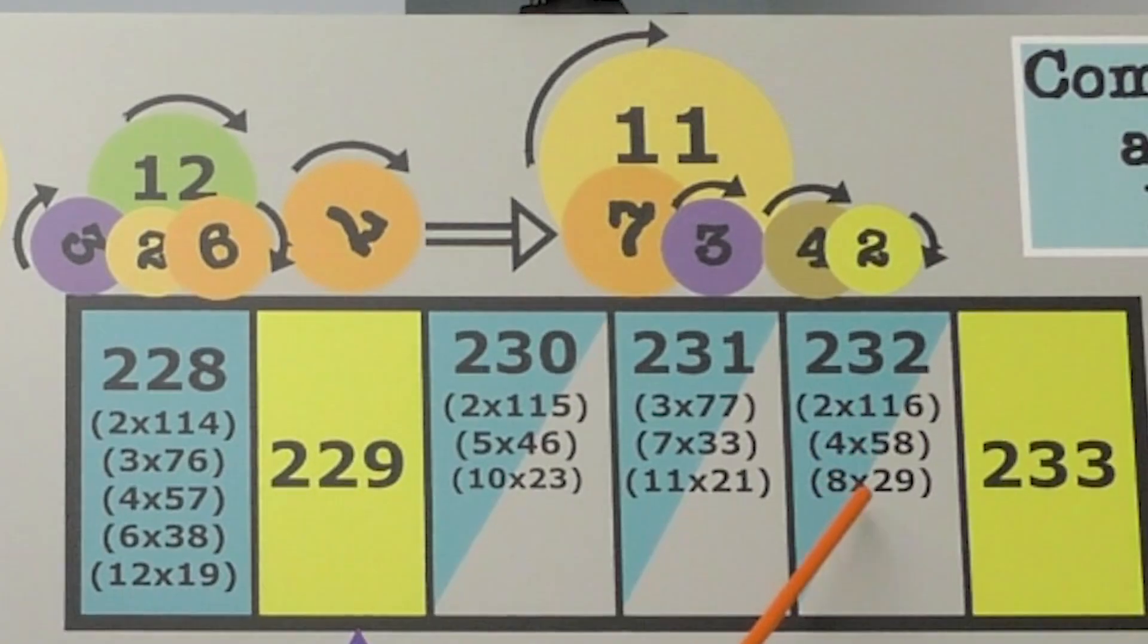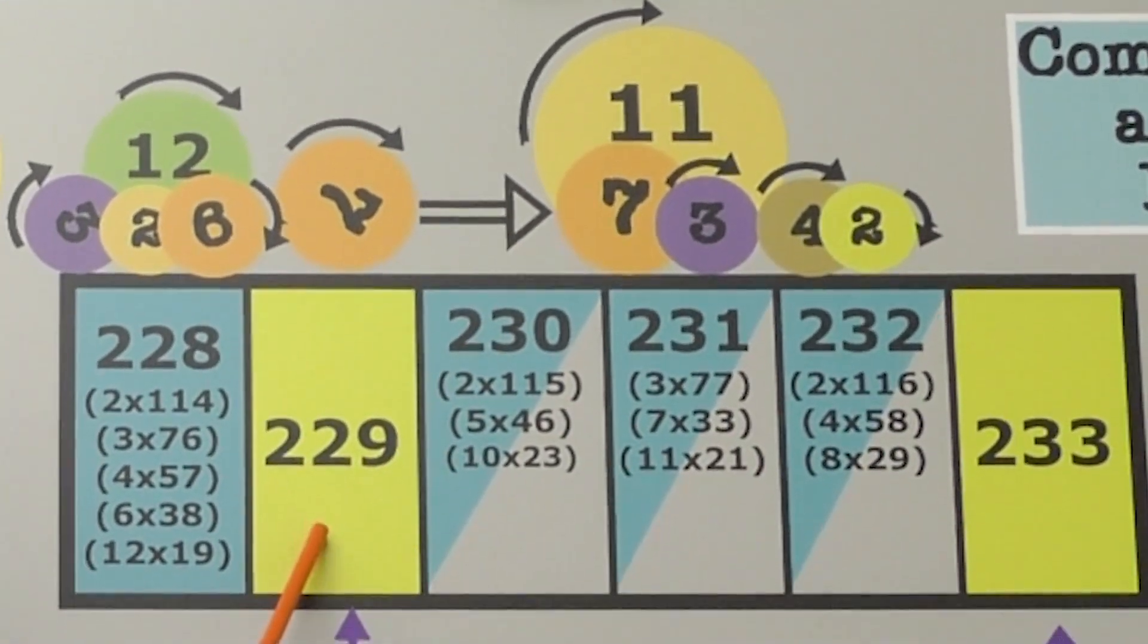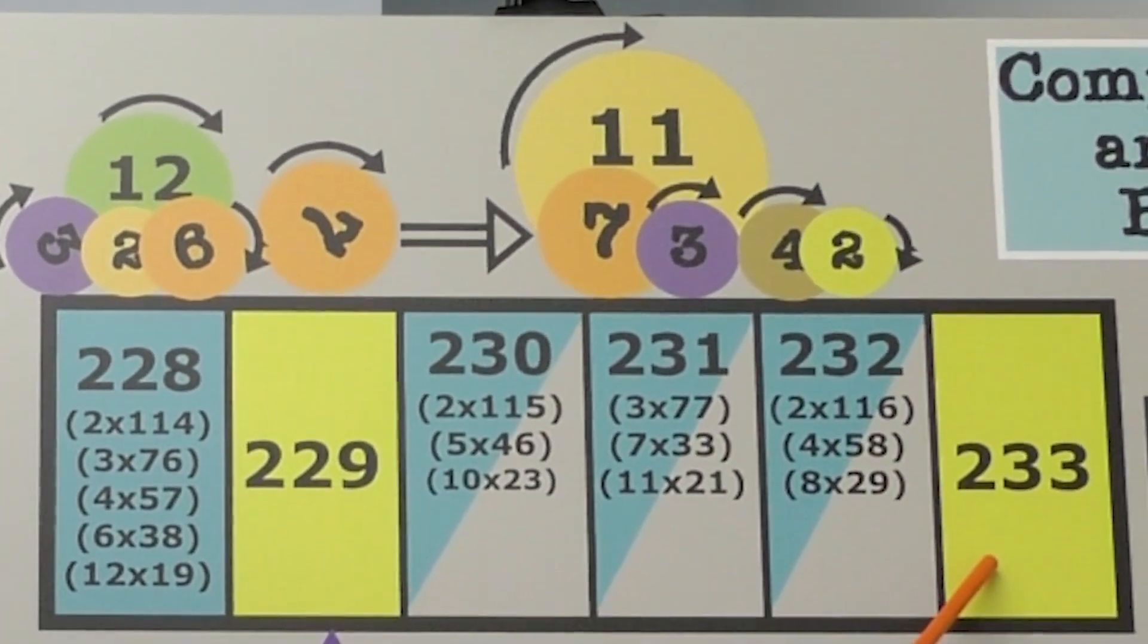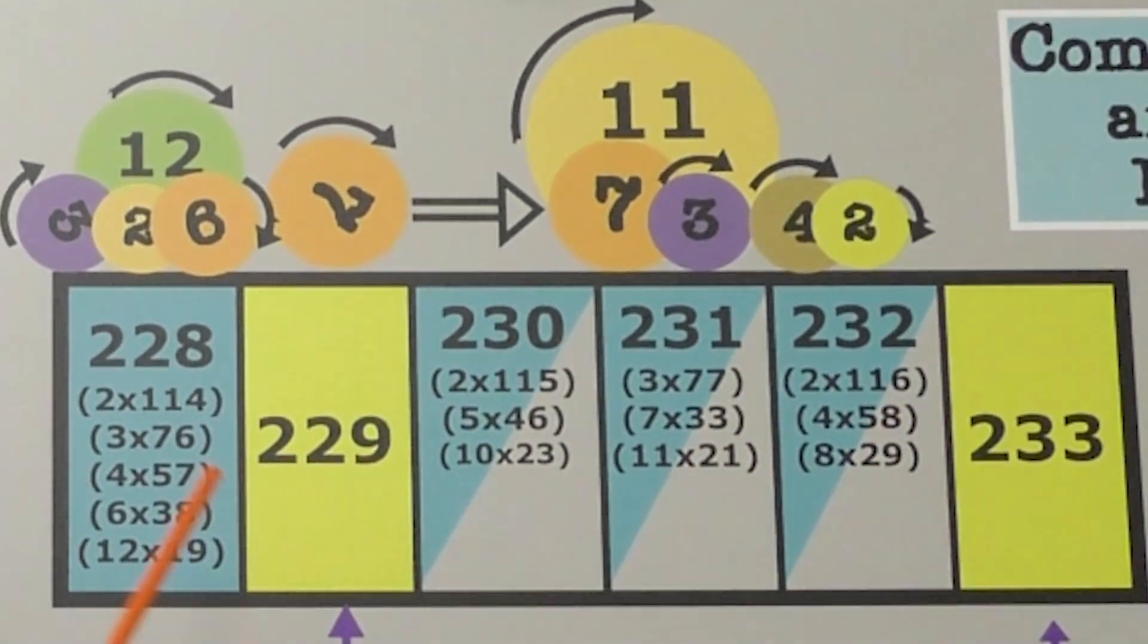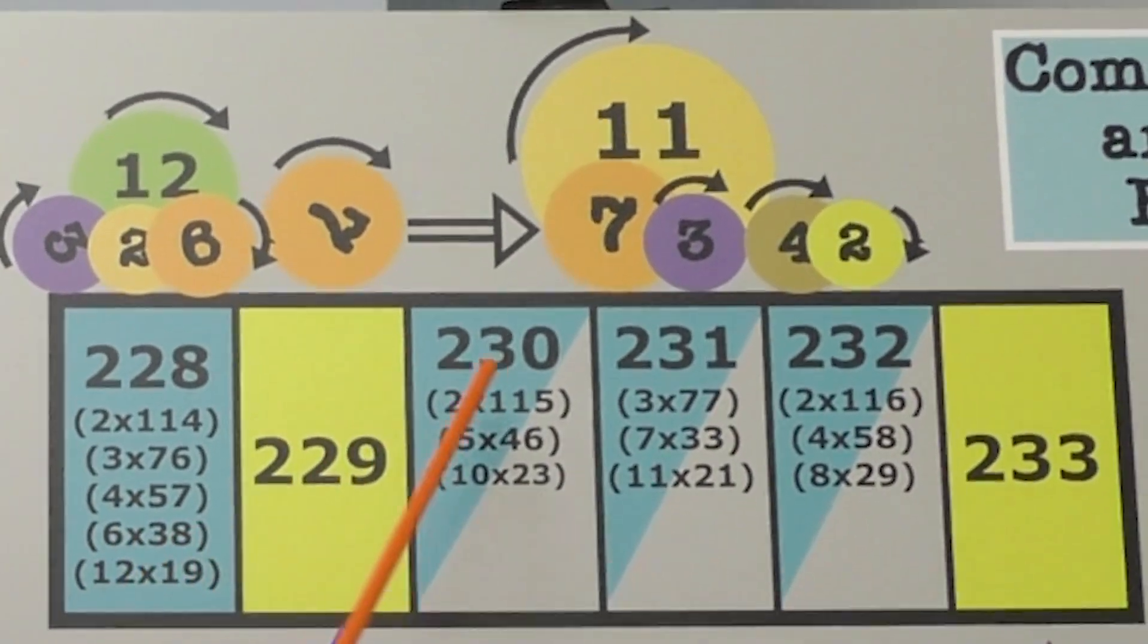Same thing here. One, two, three factor sets. One, two, three factor sets here. Where are the primes? 229 is a prime. 233 is a prime. Where are they? They are in between the composites with multiple factor sets.